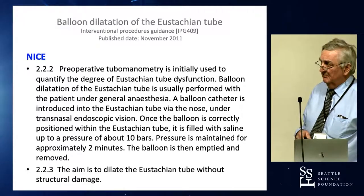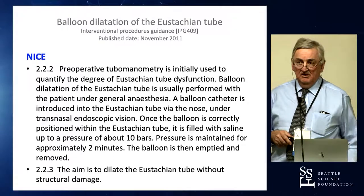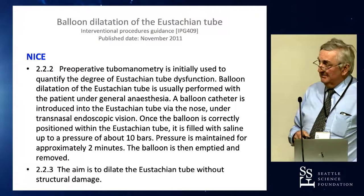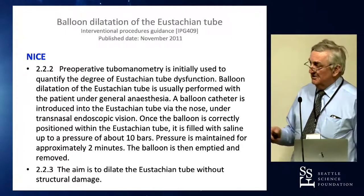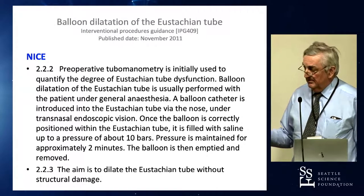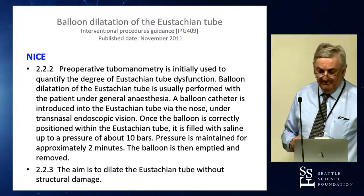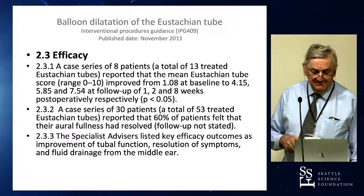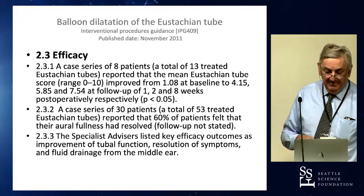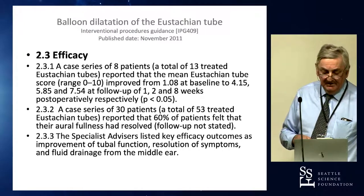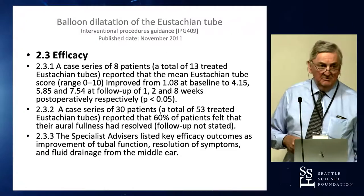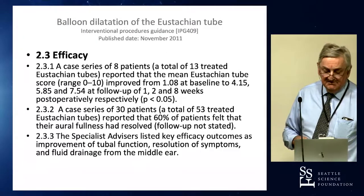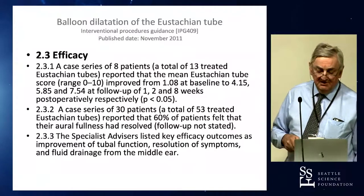In 2011, NICE came up with the principles of Eustachian tube balloon dilatation. They described what it's about, and the aim was to dilate the tube without structural damage. Efficacy in those days came from small case reports — eight patients in one study with follow-up of only eight weeks, and a case series of 30 patients — but symptoms of fullness and follow-up time were not well stated. The special advice listed outcomes as improvement of tubal function, resolution of symptoms, and fluid drainage of the middle ear.